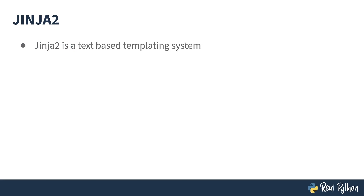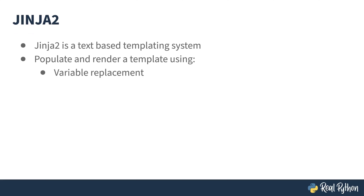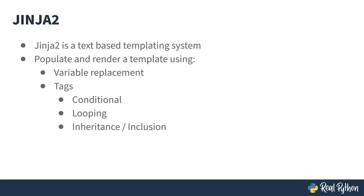Jinja2 is a text-based templating system. Through it, you can populate and render a template using variable replacement, tags including conditionals, looping, inheritance and inclusion, and function-like macros. You can also modify variable data on the fly using filters.